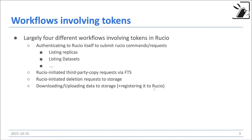This is largely about token workflows in Rucio: authenticating to Rucio itself — so doing list replicas, list datasets — then Rucio-initiated third-party copy requests, Rucio-initiated deletion to storage, because we usually organize and orchestrate deletions completely centrally, and then downloading and uploading data to or from storage. This is where the biggest changes probably have to happen.